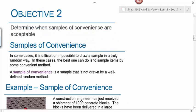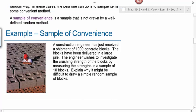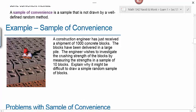Next we look at determining when a sample of convenience might be acceptable. In the last example, the instructor used a sample of convenience because her class was a convenient group to study. In some cases it's difficult or impossible to draw a truly random sample. A sample of convenience is a sample not drawn by a well-defined random method such as a random number generator. For example, a construction engineer receives a shipment of 1,000 concrete blocks delivered in a large pile and wishes to measure the crushing strength of a sample of ten blocks.